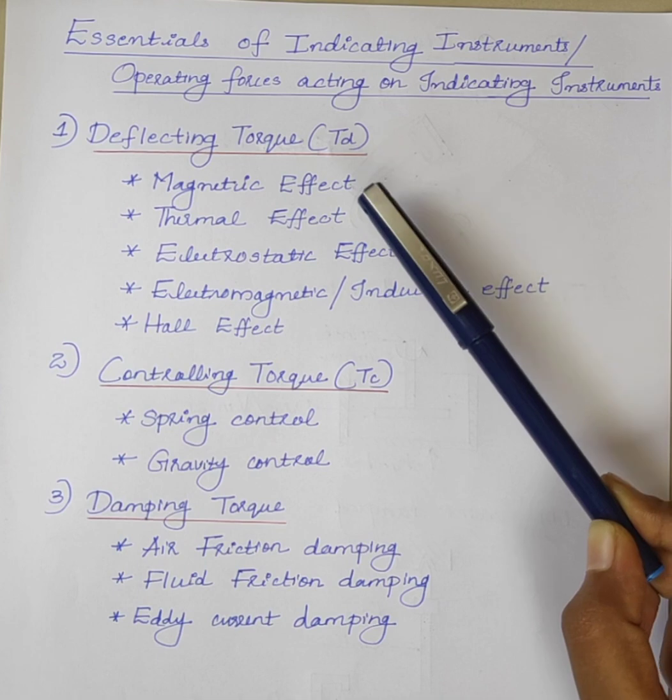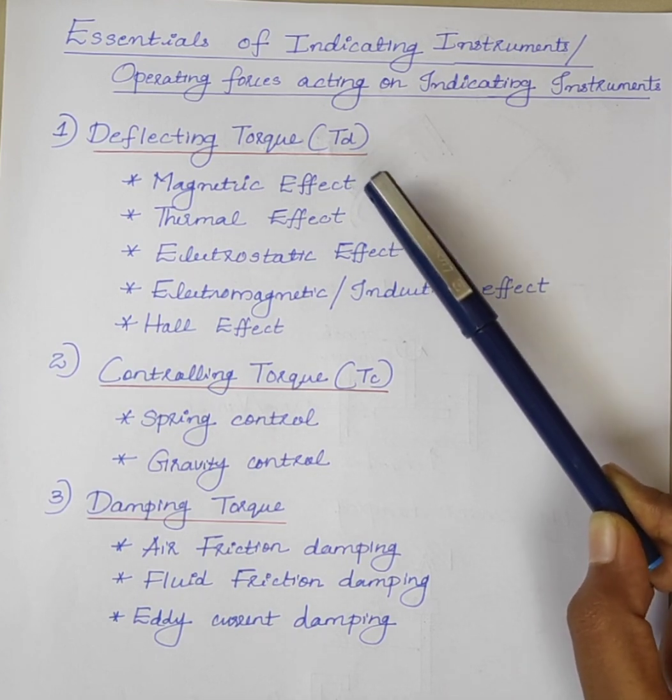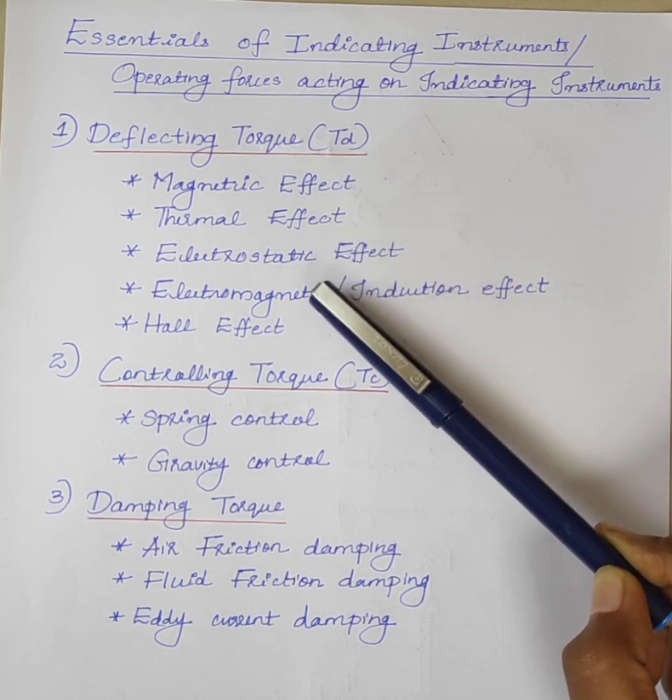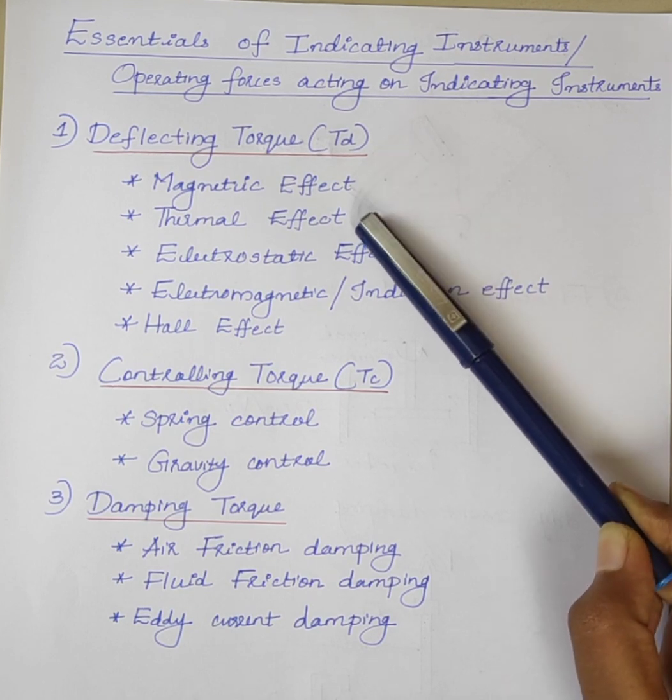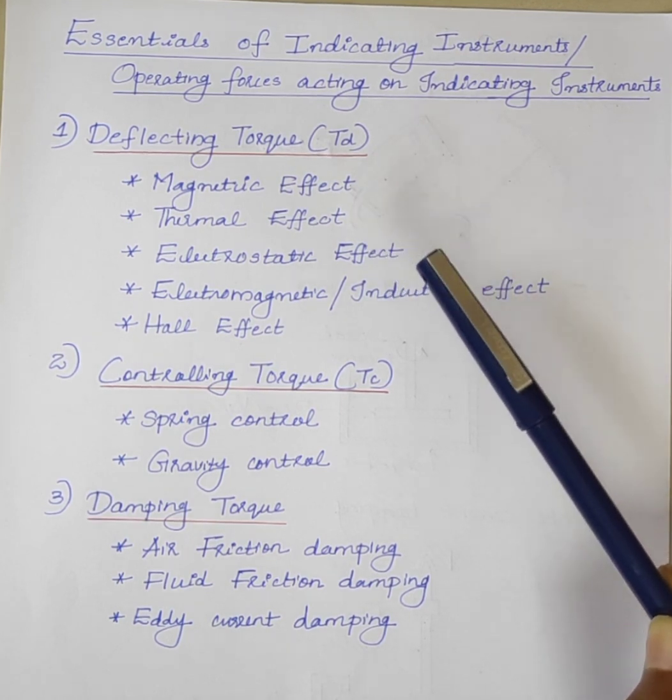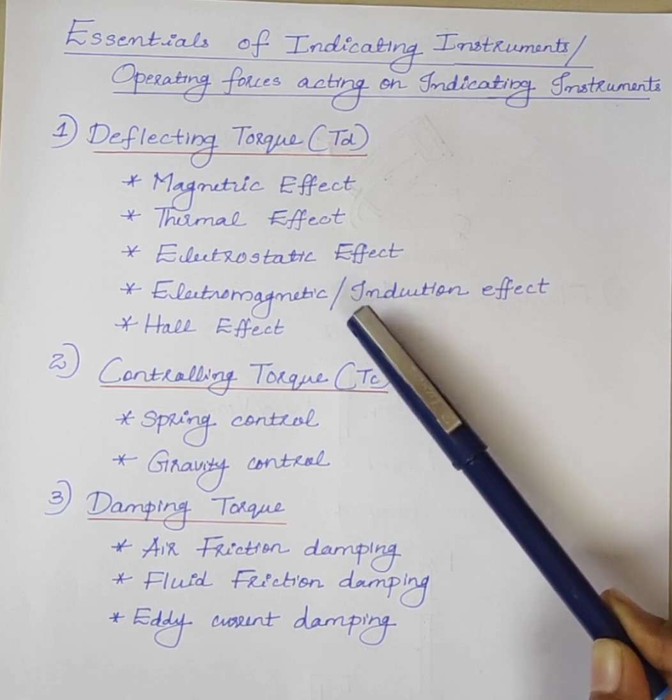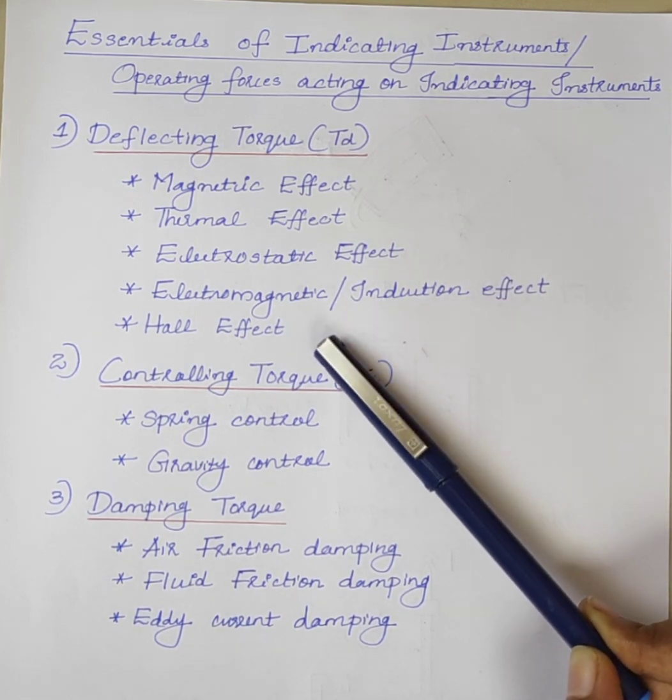Deflecting torque is produced by utilizing any of these effects: magnetic effect, thermal effect, electrostatic effect, electromagnetic or induction effect, and Hall effect.